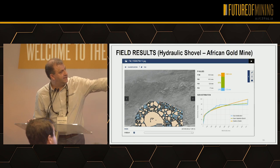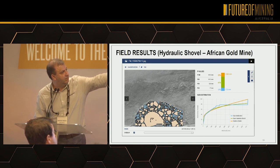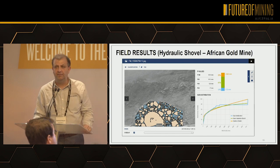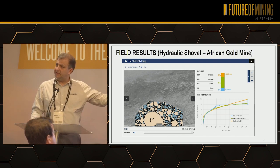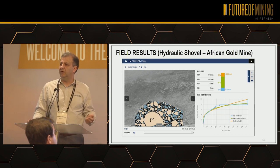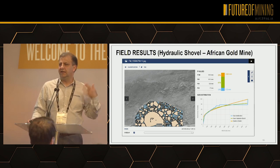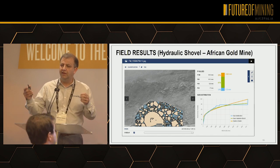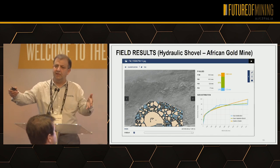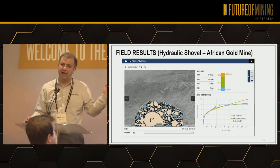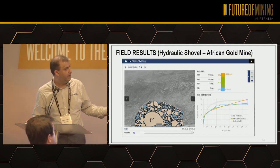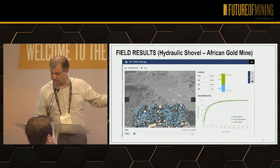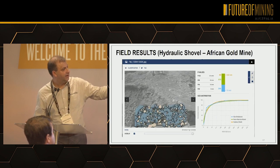Look at this one — you have a big rock, that's the P100, you can see more than one meter there, with a good amount in range and some below. Remember, this is one single image. Roughly every five minutes we ideally want to get one image, so you get good representative data and you don't need to send anybody to the field to do the dangerous job of placing basketballs, taking a picture, and coming back. The shovel is digging and we automatically get this. Here's an African gold mine, hydraulic shovel — a lot of fines and a couple of rocks.